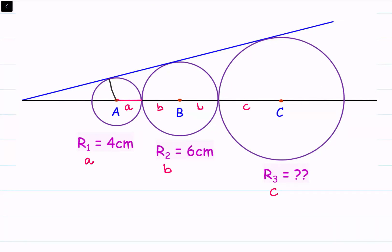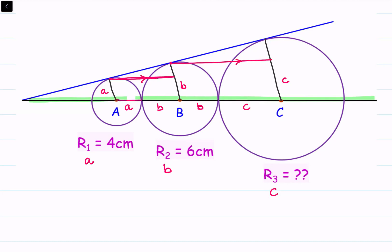From center A I am drawing the radius to the tangent, then from center B, and then from center C. These are the radii with lengths a, b, and c respectively. Now for the construction, we draw a line parallel to the black line from the tangential points. This line is parallel to the black line, and we draw another line parallel to the black line from the next tangential point. So these lines are all parallel to each other. All radii are perpendicular to the blue tangent line.